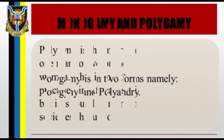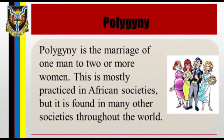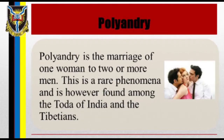Polygamy is in two forms: polygyny is the marriage of one man to two or more women, and polyandry is the marriage of one woman to two or more men. Polygamy is the preferred form in many societies; however, it does not follow that every married individual, or even the majority of married men, has more than one spouse. In fact, in such societies monogamy is statistically the prevailing form. There is another form known as group marriage, which is a combination of polygyny and polyandry, where groups of men and women enjoy more or less equal conjugal rights over each other.